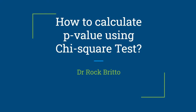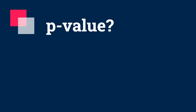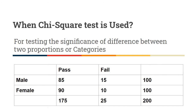Hello, in this video I am going to demonstrate how to calculate p-value using chi-square test. Before going to the presentation, I want to ensure two things: you should be clear about what is p-value — if not, please see my video displayed in the cards above. The second thing is understanding the situation where chi-square test is used: it is used for testing the significance of difference between two proportions or categories.